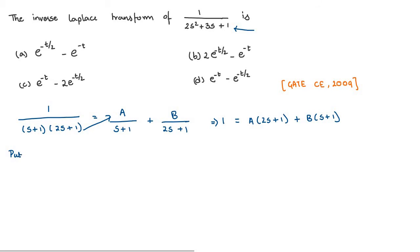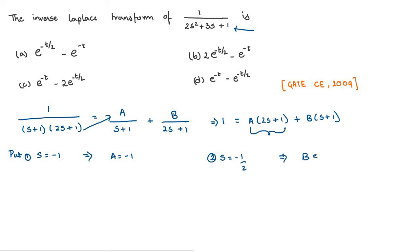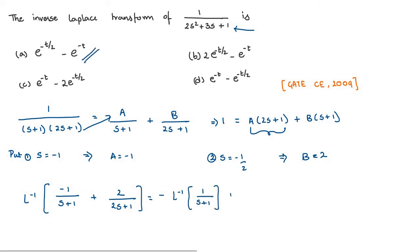To solve for A and B, first put s = −1 which makes the B term equal to 0. We get A = −1. Now put s = −1/2 to make the A term equal to 0, and we get the value of B = 2. Putting the values of A and B in the equation, we get −1/(s+1) plus 2/(2s+1). This can be written as minus inverse Laplace of 1/(s+1) plus inverse Laplace of 2/(2s+1).